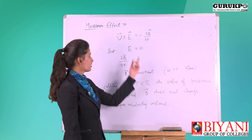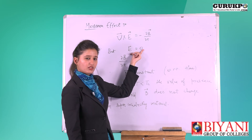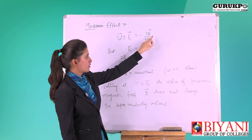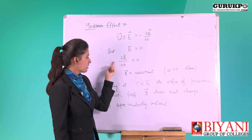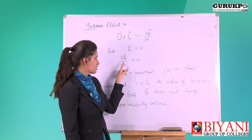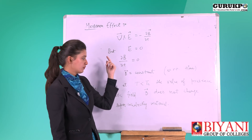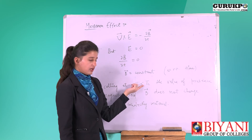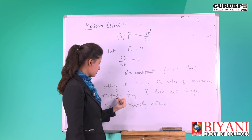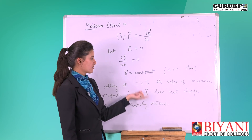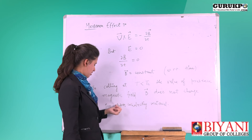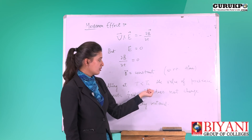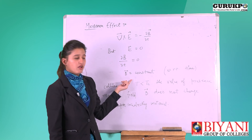According to Maxwell's equation, ∇×E equals minus ∂B/∂t. Since E equals zero, ∂B/∂t will equal zero. This means B will be constant with respect to time. So when cooling at temperature T less than the critical temperature, the value of the present magnetic field B does not change — it remains constant in the superconducting material.